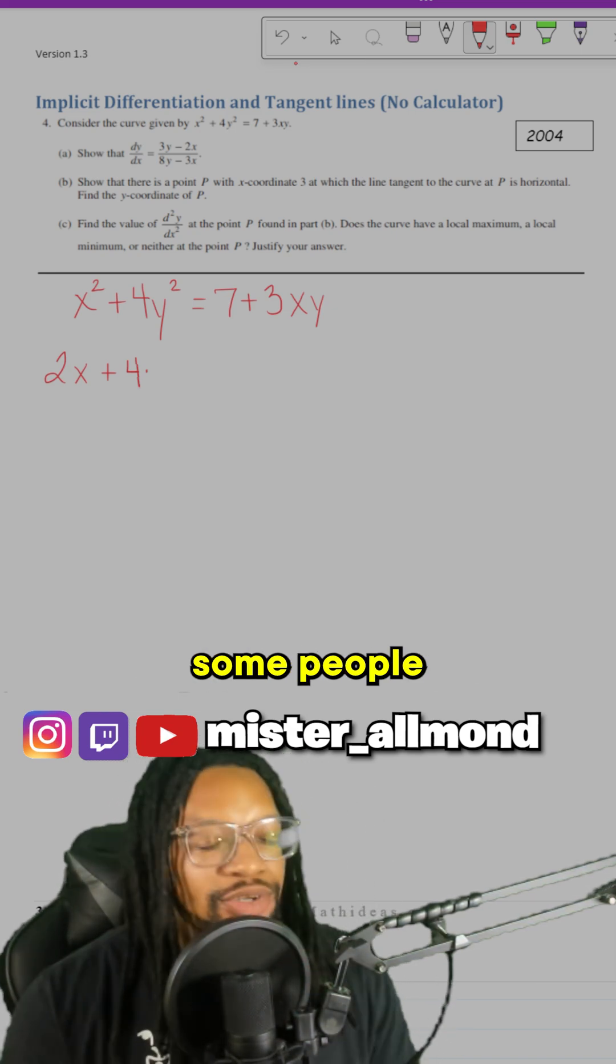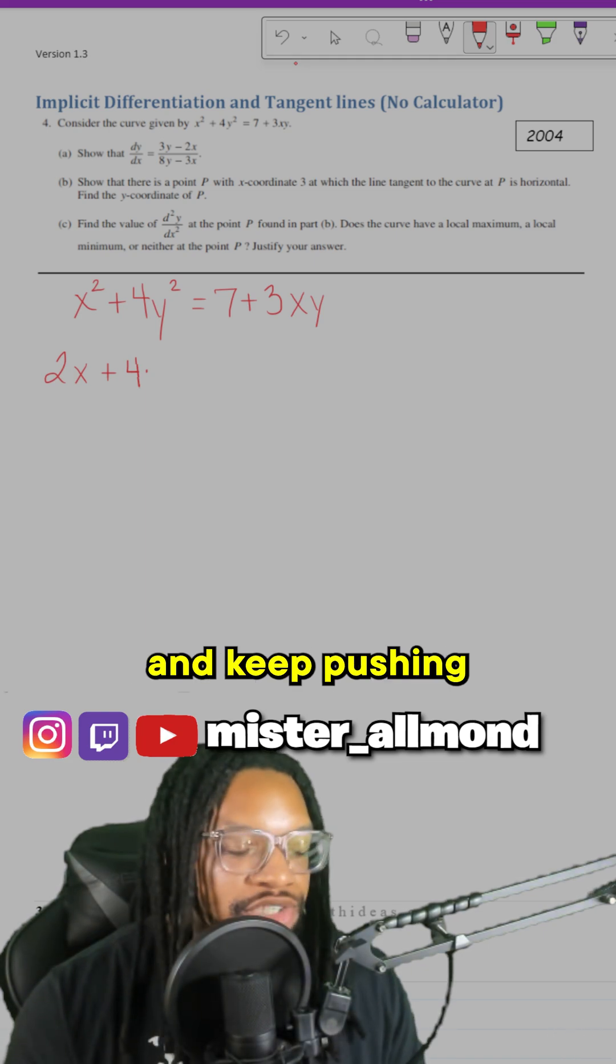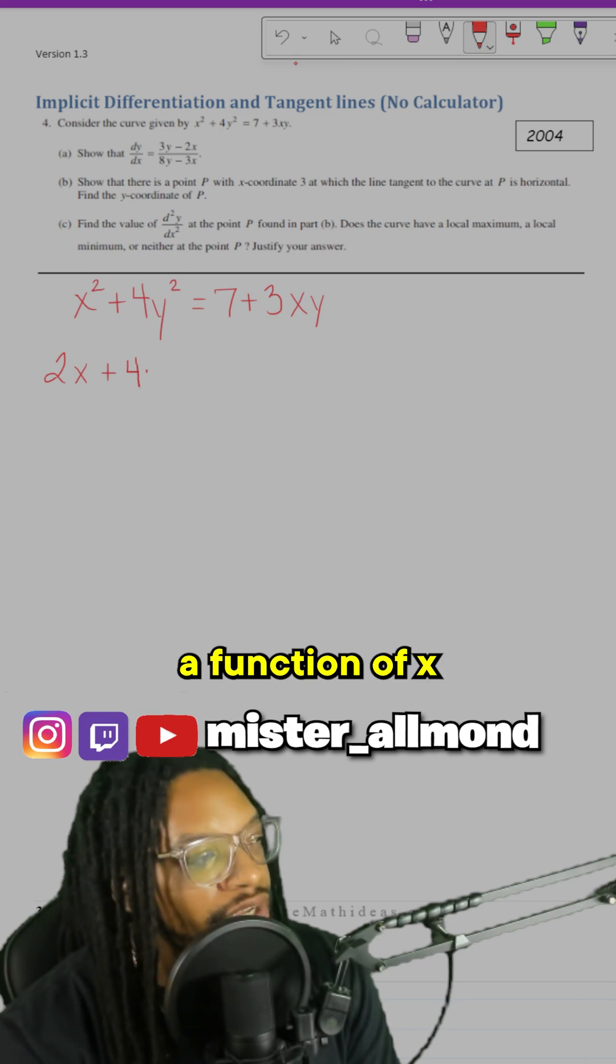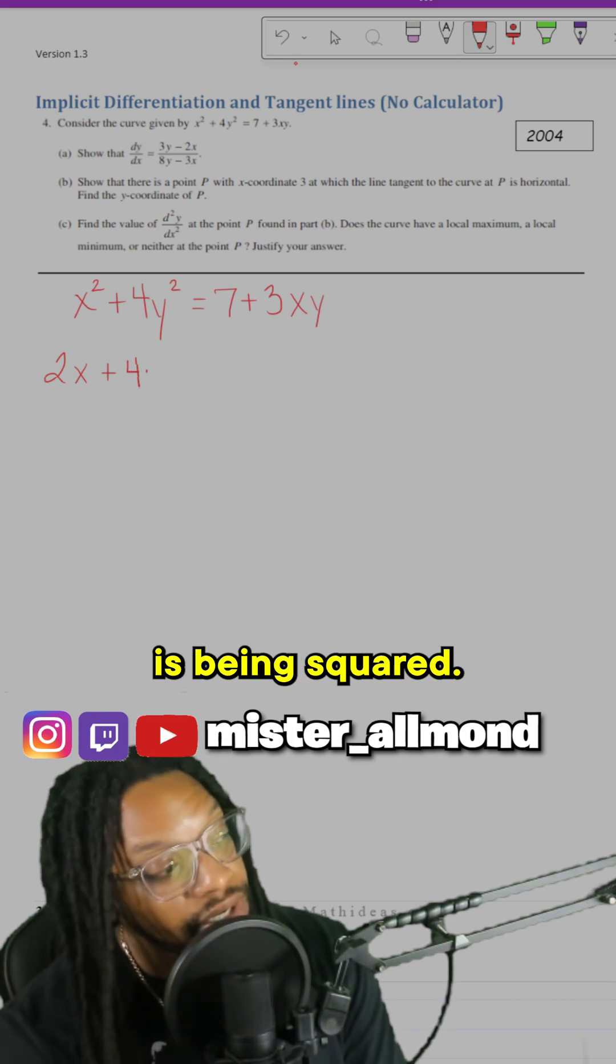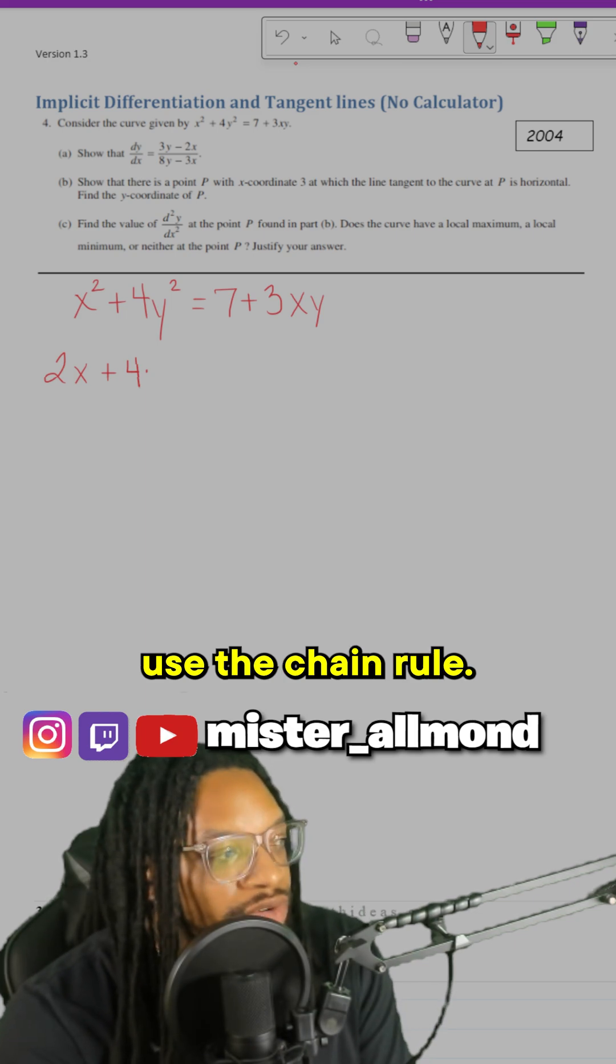I already know some people on this test coming up are going to put 2y and keep it pushing, and they're going to get it wrong. Why? Because y is a function of x, and that function is being squared. So that's technically a composition of functions, meaning I have to use the chain rule.